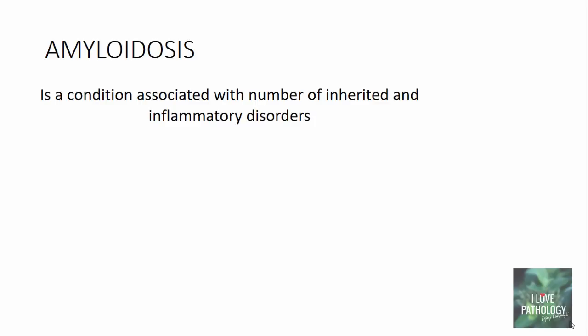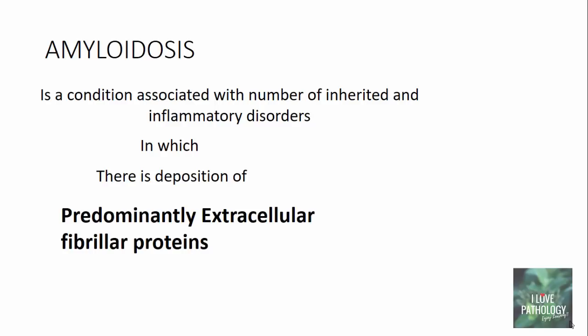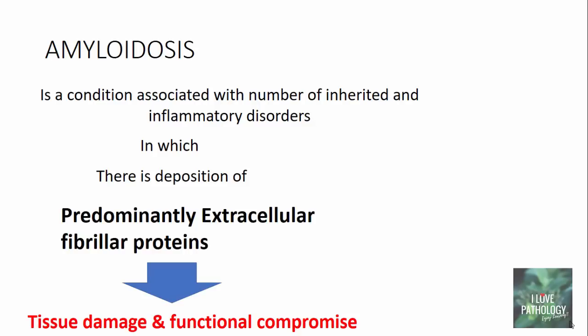Coming to the definition of Amyloidosis: Amyloidosis is a condition associated with a number of inherited and inflammatory disorders where there is deposition of predominantly extracellular fibrillar protein. Previously it was defined as deposition of extracellular fibrillar proteins only, but it is now found that deposition can also be intracellular. It is this extracellular fibrillar protein deposition which results in tissue damage and functional compromise.